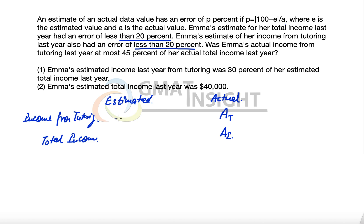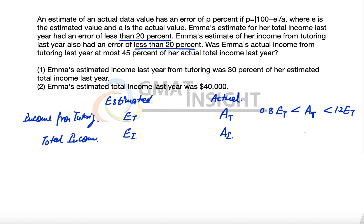The first condition says AT has less than 20% error, meaning AT is between 0.8 times ET and 1.2 times ET. Similarly, the actual total income AI has less than 20% error, so AI is between 0.8 times EI and 1.2 times EI.